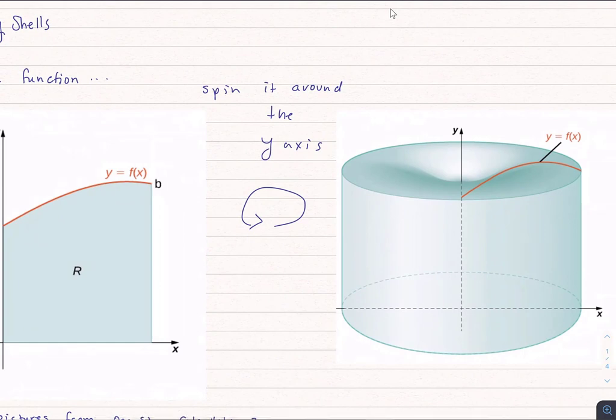If we sliced it this way in terms of x, it's not going to work well because our cross sections won't be circles. The washer and disk method require the cross section to be circles.